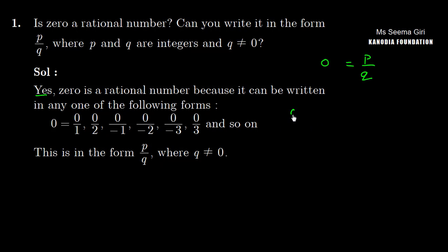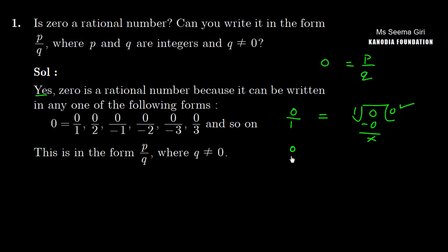Now let me show how. 0 upon 1 means 0 will be divided by 1 — 1 zero is 0. So what answer did we get? 0. It means 0 upon 1 gives us 0. So we can write 0 in P upon Q form.